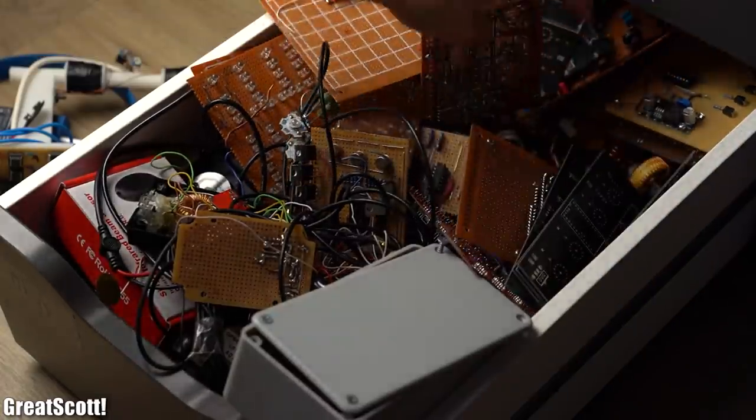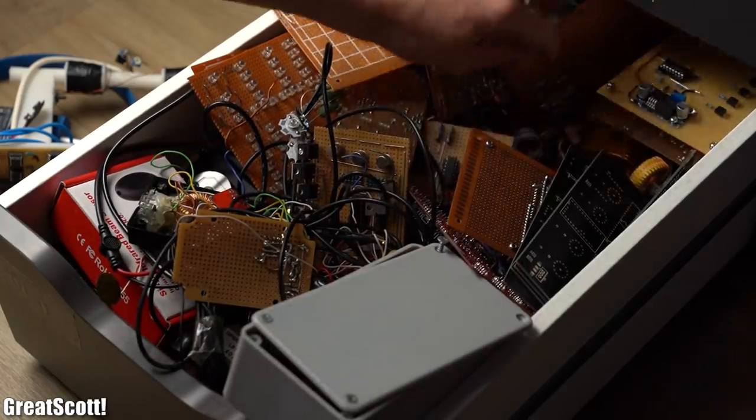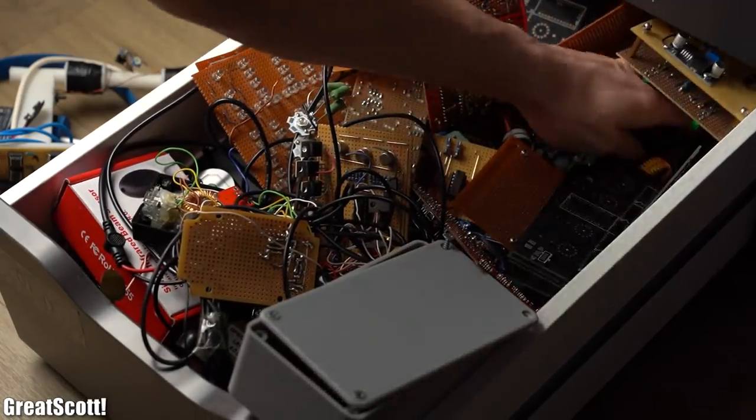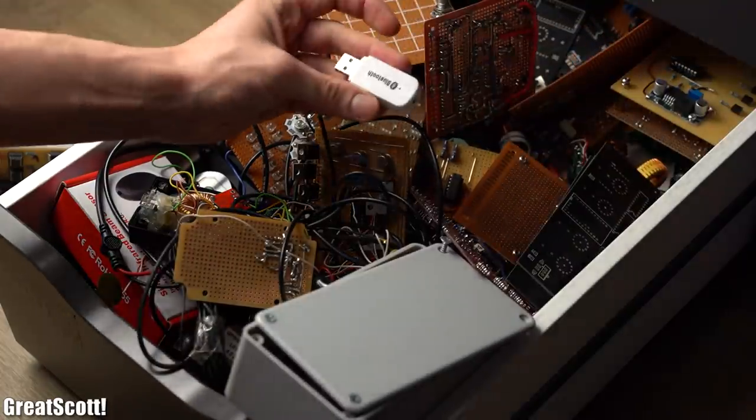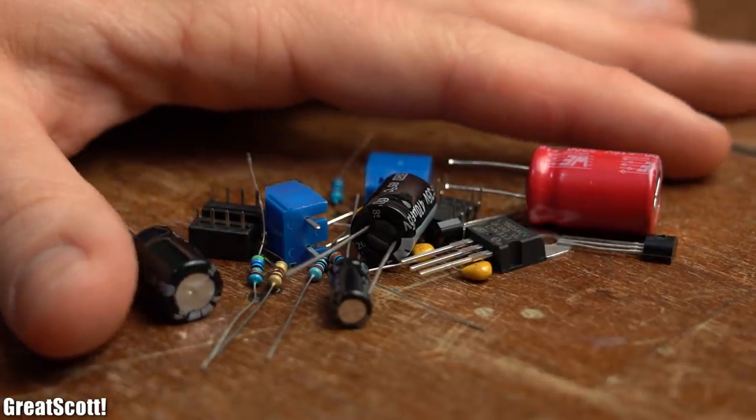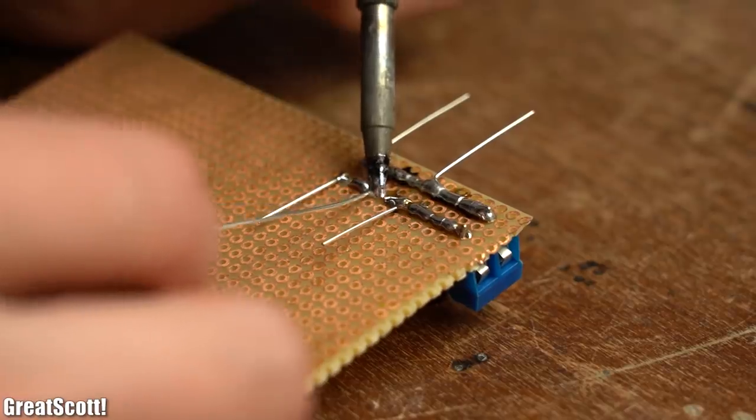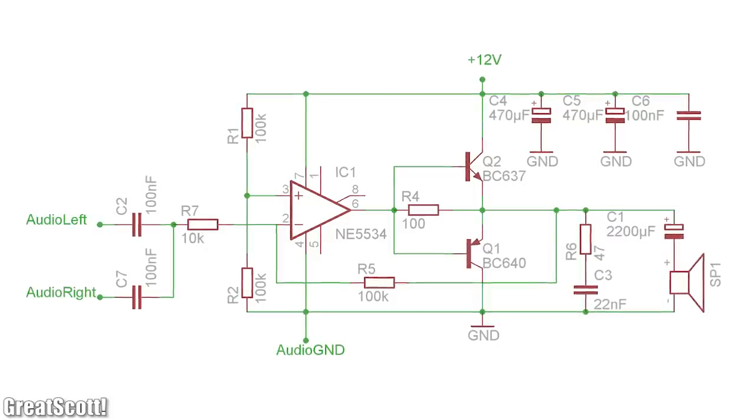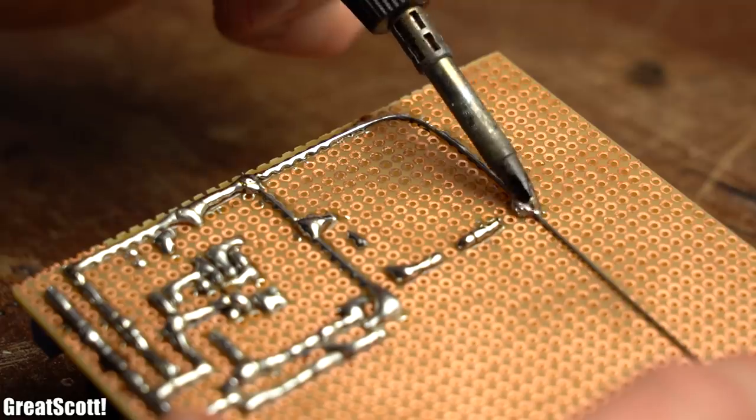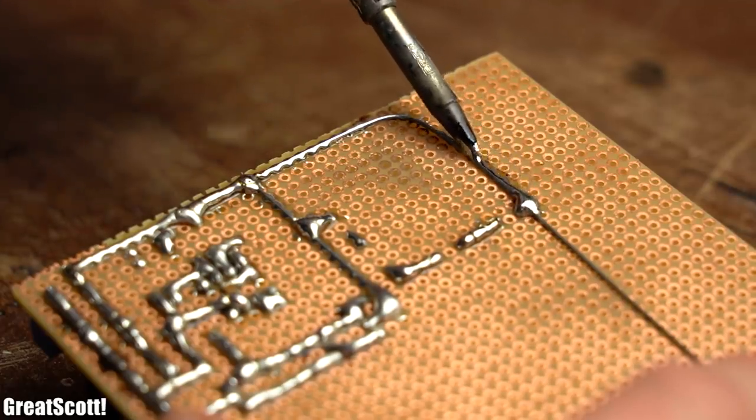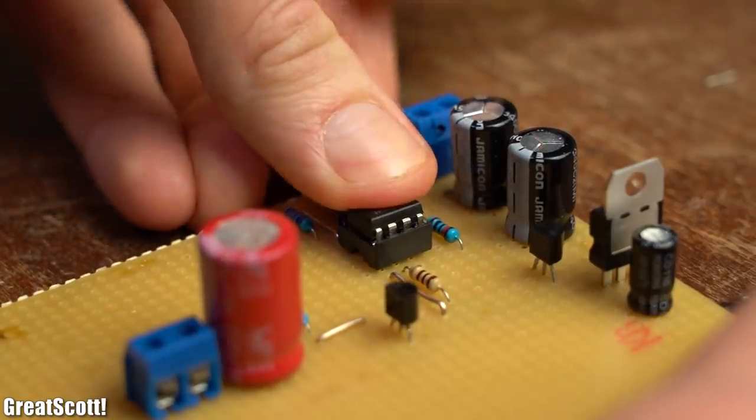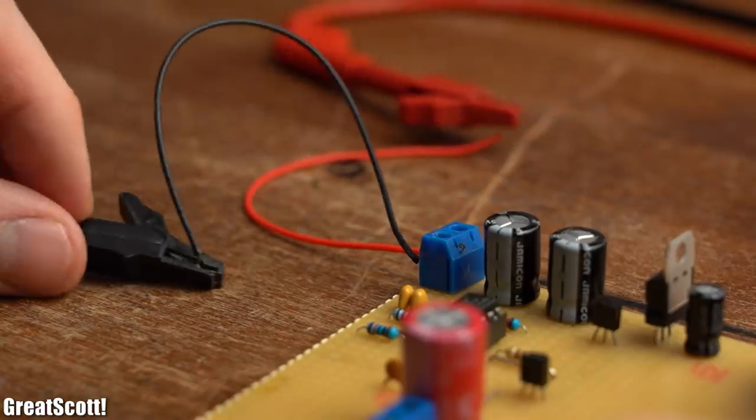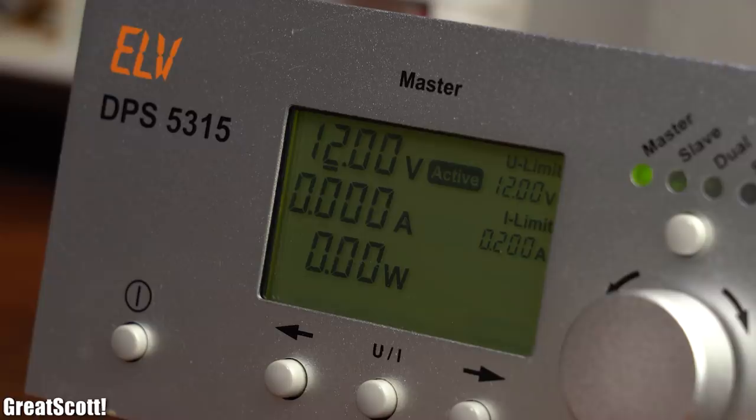Now at this point we obviously need the amplifier from back then, but since I could no longer find it anywhere, I was pretty much forced to gather all the required components and start building a second amplifier based on the schematic I created back in the days. And after around 2 hours of soldering, the amplifier was complete and does not blow up when powering it with 12V. Perfect!